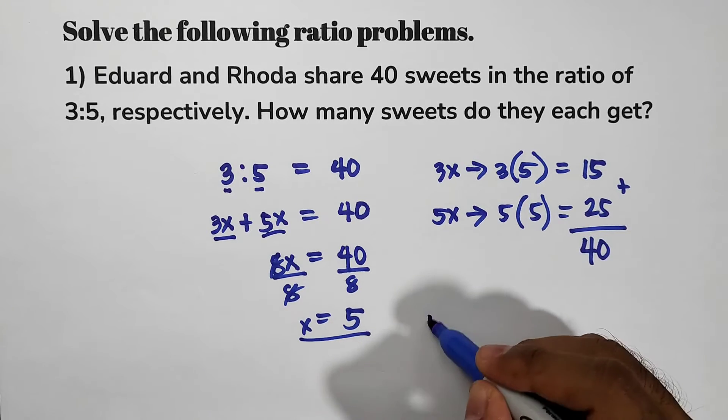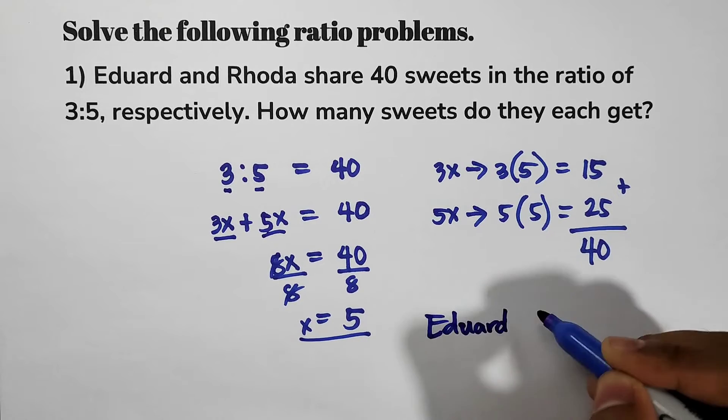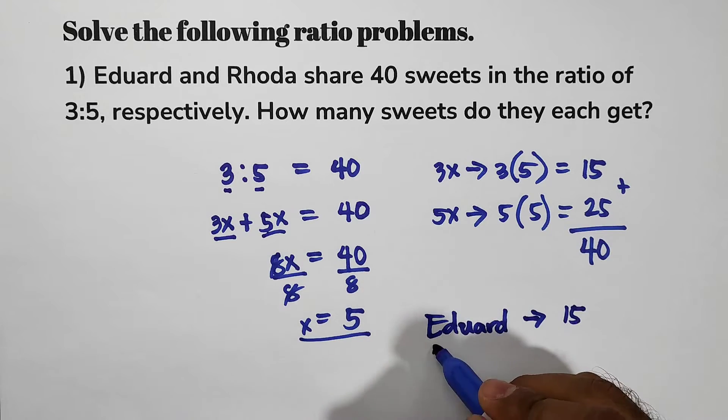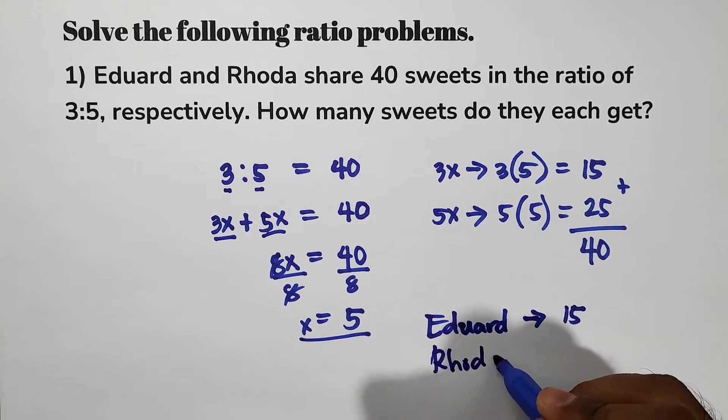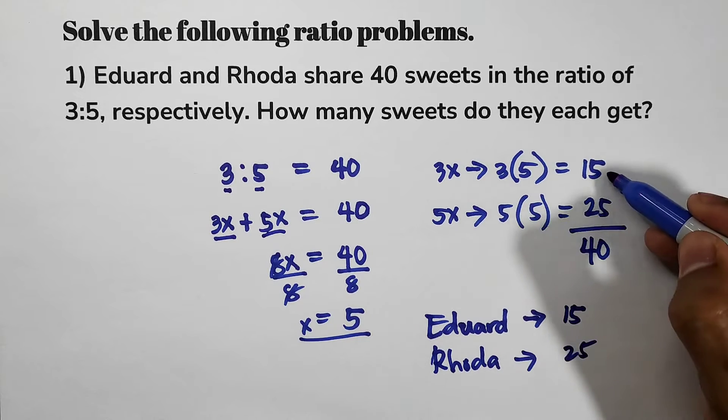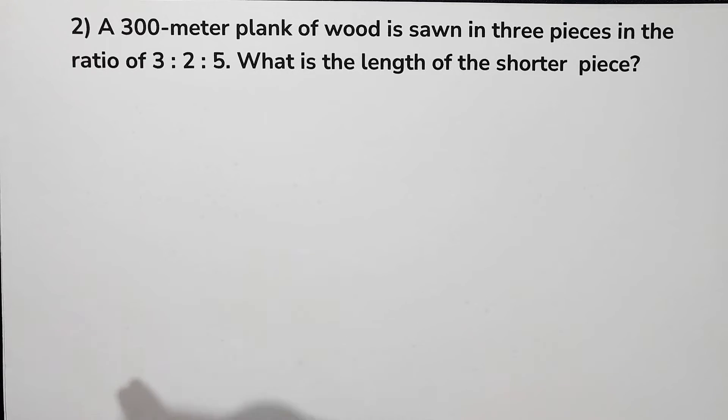Therefore, Edward gets 15 sweets and then Rhoda gets 25 sweets. So let us have item number 2.